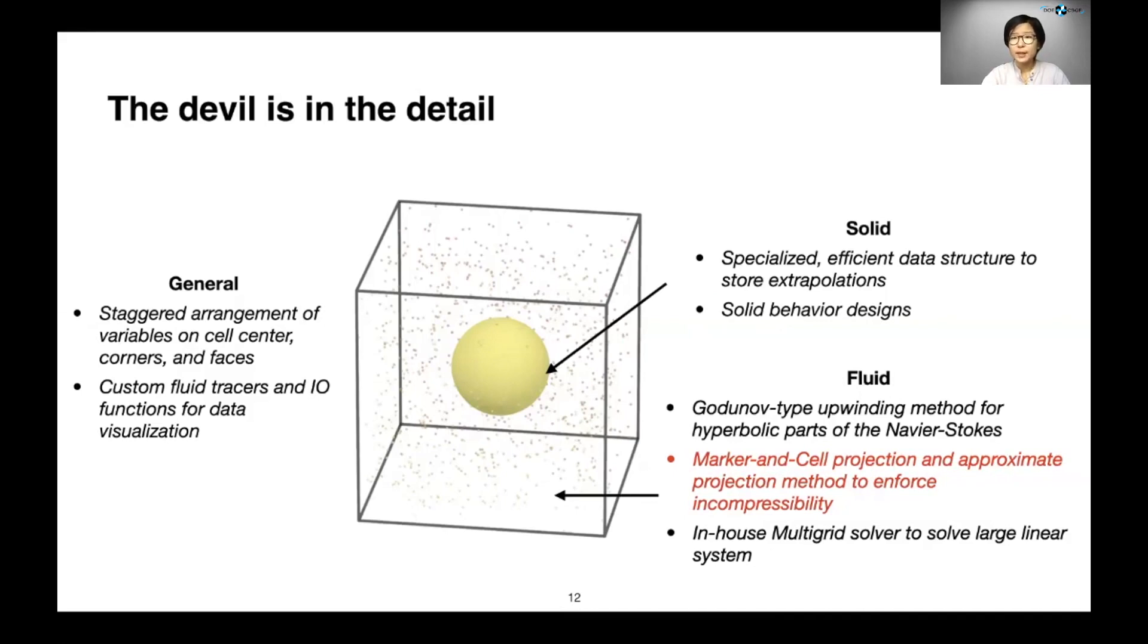To make our method work in 3D, fast and robust, we have used many other methods and techniques that I won't have time to go into here. But some of the honorary mentions include, for example, the projection methods that we need to use to enforce fluid incompressibility constraints, as well as the specialized efficient data structures that we needed to create to store extrapolation data so that they are only localized to the objects that they belong to.